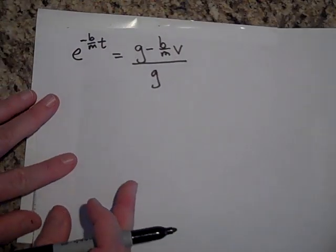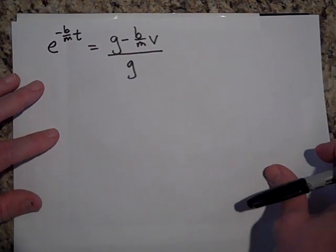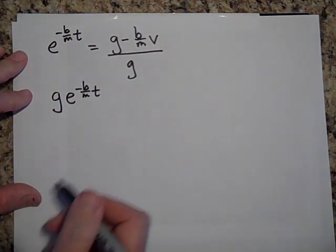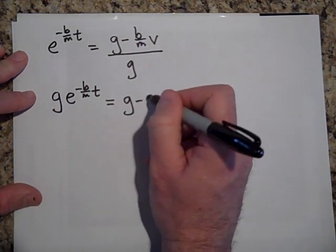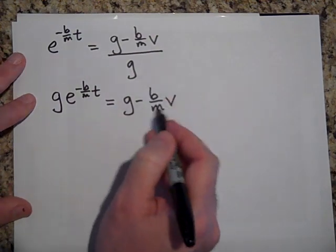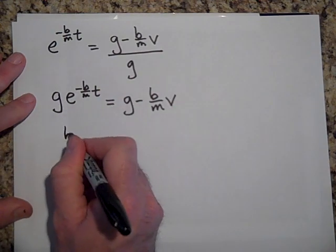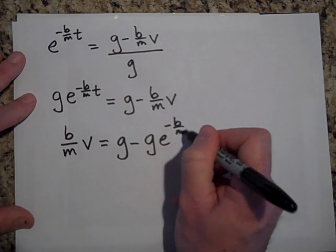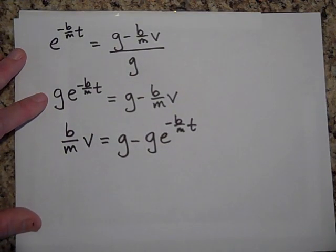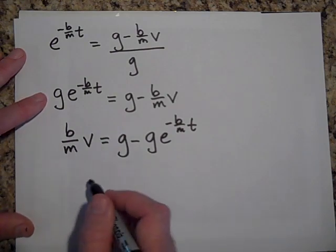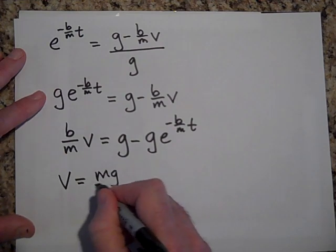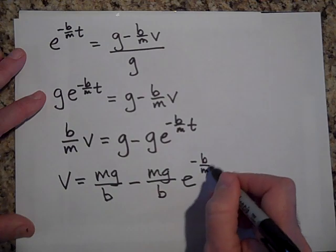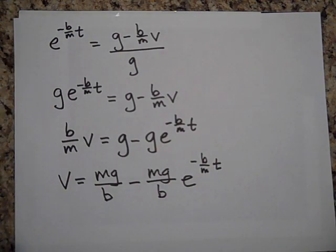I'm getting closer. Bring this g over to the other side, then rearrange terms: (b/m)v equals g minus g times e to the negative b over m times t. Then divide through by m over b, giving v equals mg over b minus (mg over b) times e to the negative b over m times t.